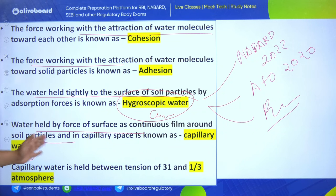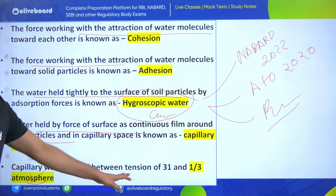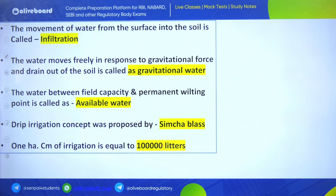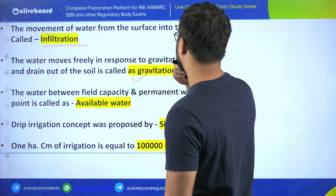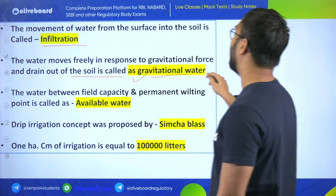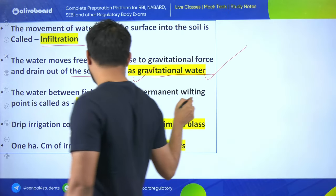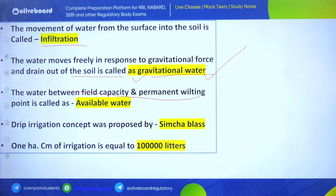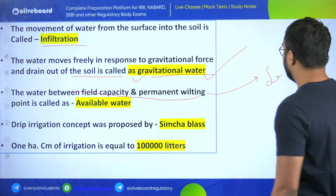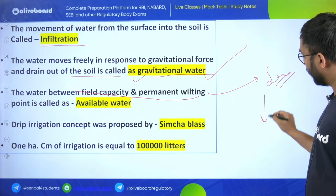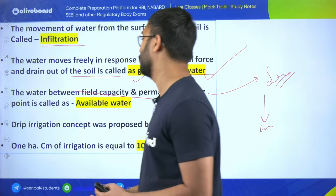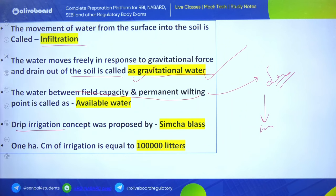Water that moves freely in response to gravitational force and drains out of the soil is called gravitational water. Know about field capacity and permanent wilting point. Permanent wilting point is the stage at which complete drying of leaves and plant stalk takes place, where water available to the plant is not sufficient for its survival. The drip irrigation concept was proposed by Simcha Blass. One hectare-centimeter of irrigation equals 1 lakh liters.